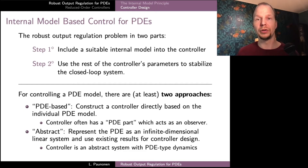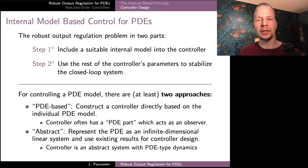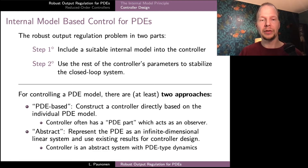We already saw that the internal model principle can be used in controller design for robust output regulation, and there are at least two very general approaches. One is to start with the individual PDE, figure out what kind of general controller structure gives us the required internal model, and then add additional parts or parameter choices to guarantee closed-loop stability. Alternatively, we can use a more abstract route where we first represent our original PDE system as an abstract system on an infinite-dimensional vector space.